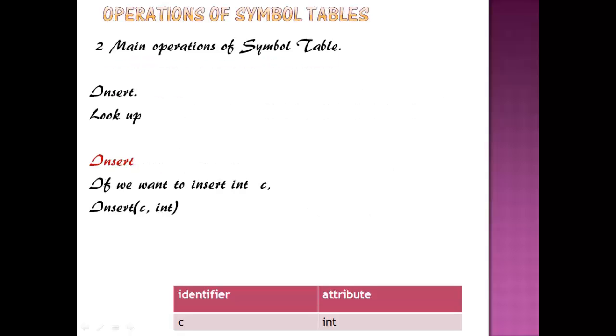Operations of Symbol Table: Two main operations of Symbol Table are Insert and Lookup. First, we will see about Insert. Insert operation takes the Symbol and its attributes as argument and store the information in Symbol Table.